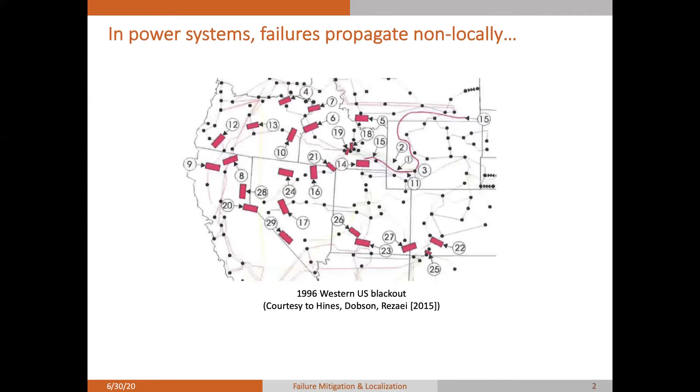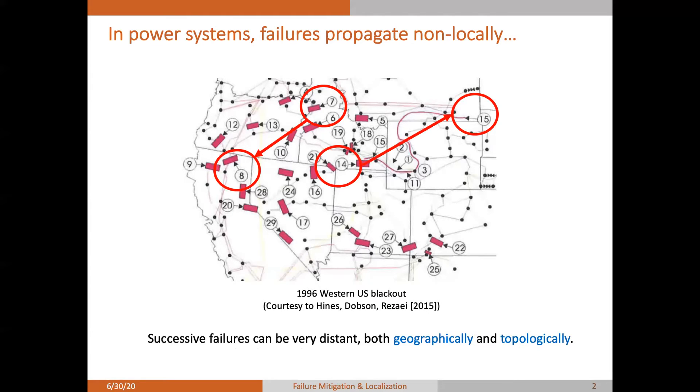Failures in power systems propagate non-locally. As shown in this figure, the failure sequence of a real blackout in 1996, we see these successive failures happened hundreds of kilometers away from each other. And this non-local propagation makes it particularly challenging to predict, analyze, and control for the failures.